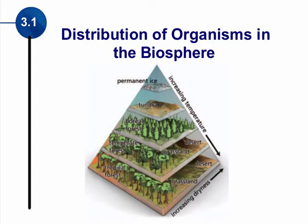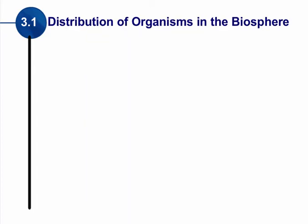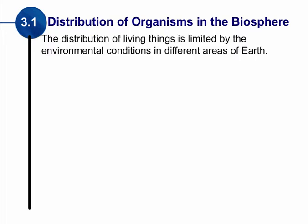Let's look at the distribution of organisms within a biosphere. When we're talking about organisms being distributed, the distribution depends on the environmental conditions. So things living somewhere depend on the environmental conditions of that area of the earth. Not every type of organism lives in every part of the earth.